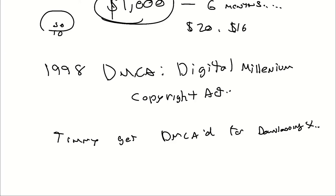The DMCA criminalizes the production and dissemination of technology, devices, and services intended to circumvent measures that control access to copyrighted work — things like DRM, which is Digital Rights Management. DRM used to be a bigger thing back in the day, but it's still there, and it makes it hard to copy things.